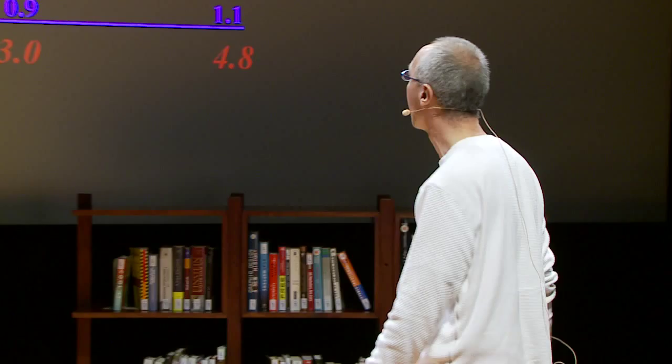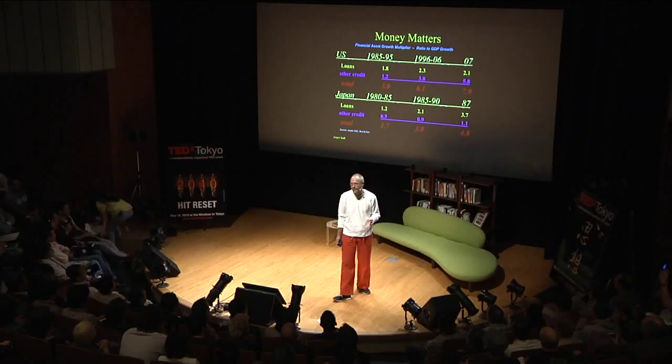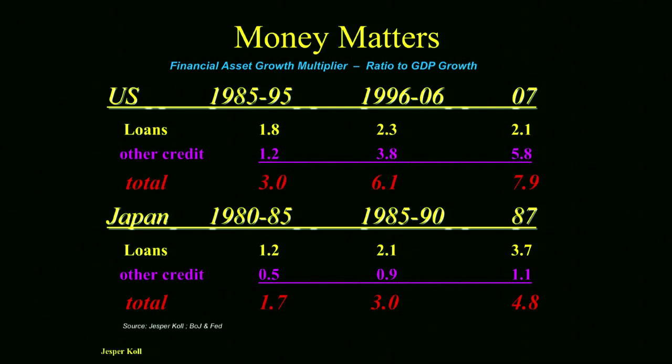We're going to have to do some numbers. I'm told this is a very busy slide, but this is what the force of the bubble economy has been in Japan and in the United States. This is the money multiplier — how many financial assets do I need to mobilize to make one unit of national income?